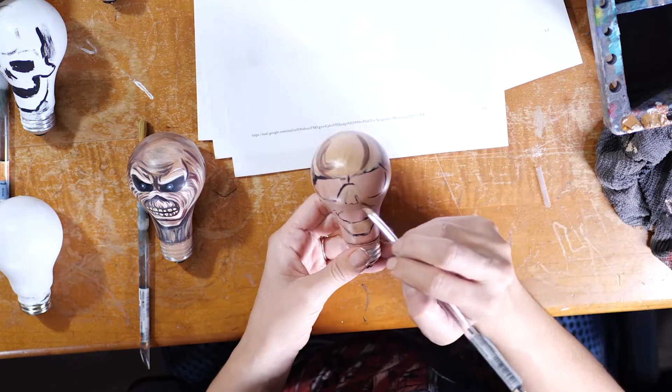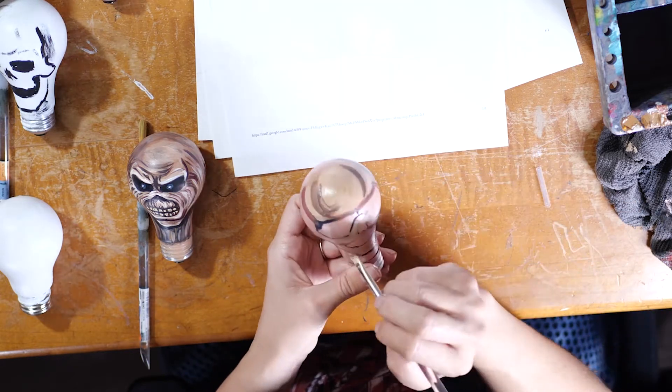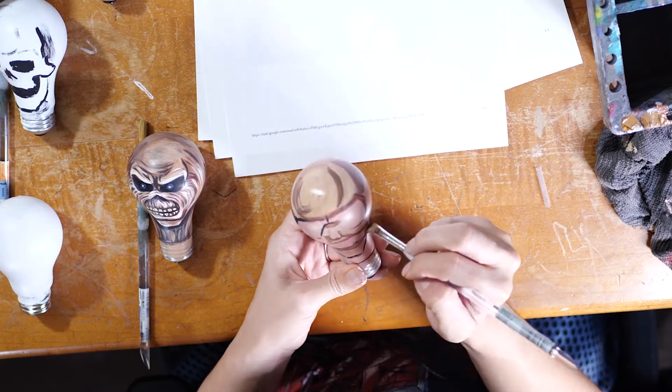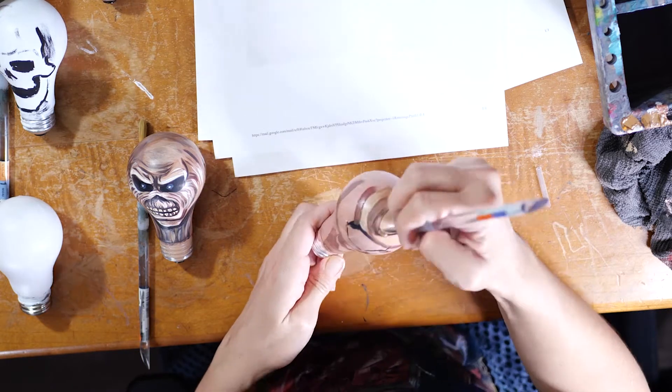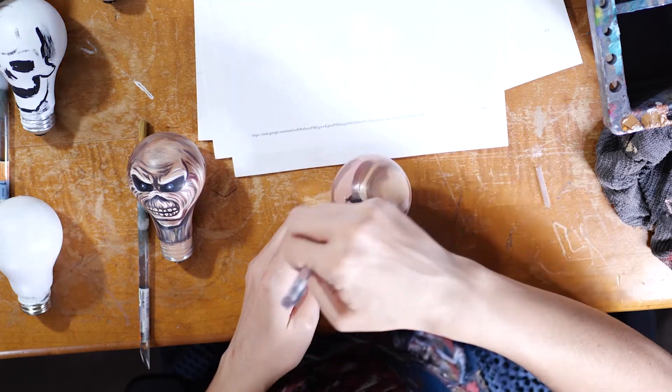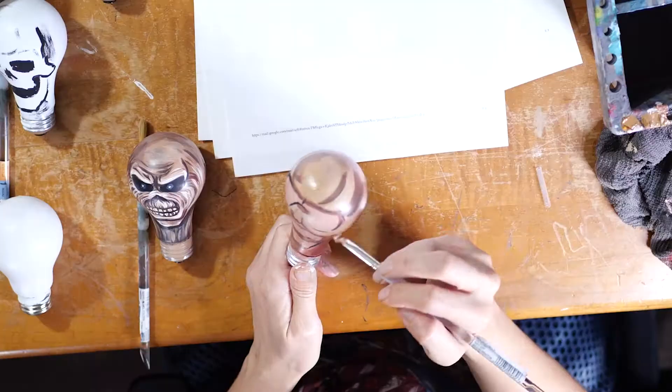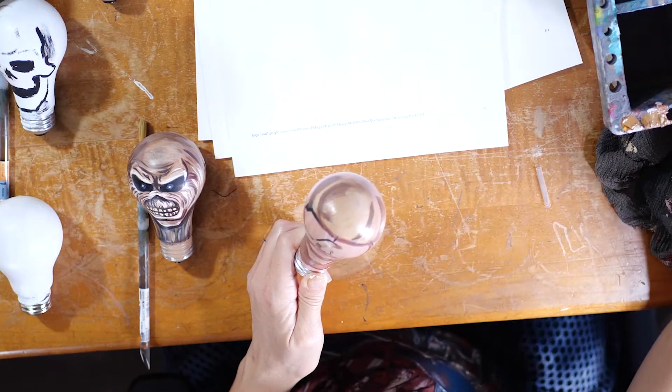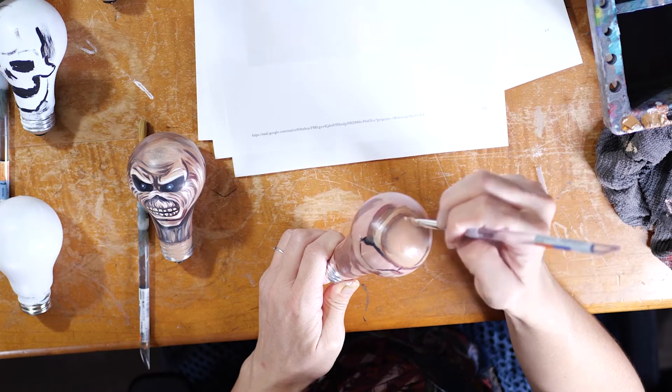Now I'm taking that darker brown and I'm blending in all the dark areas that I've marked with the black. And I'm just trying to blend it with some of those lighter colors that I've mixed up.